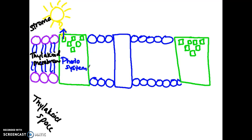Because there are two photosystems, the one I just drew and another one over here — we differentiate them by numbering them. This one is actually photosystem 2. So to recap: a photon of light struck a chlorophyll molecule within photosystem 2, and an electron from within that chlorophyll got excited.